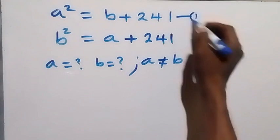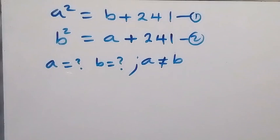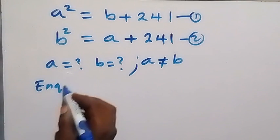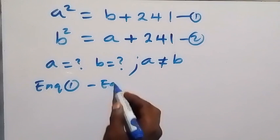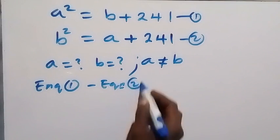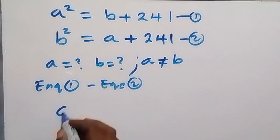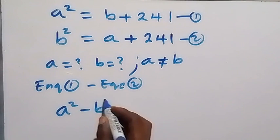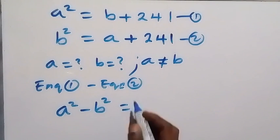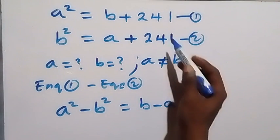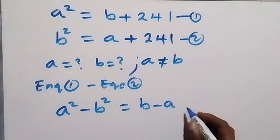Let's call this equation 1 and this equation 2, and from here let's subtract equation 2 from equation 1. So we have equation 1 minus equation 2. When we subtract, we have a squared in equation 1, that's a squared minus b squared in equation 2, equals b minus a. Then 241 minus 241 becomes 0.